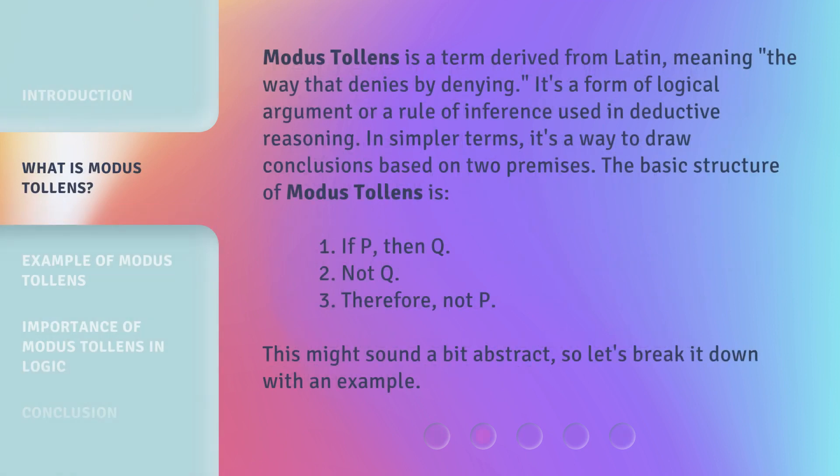Modus tollens is a term derived from Latin, meaning 'the way that denies by denying.' It's a form of logical argument, or a rule of inference, used in deductive reasoning. In simpler terms, it's a way to draw conclusions based on two premises. The basic structure of modus tollens is as follows: